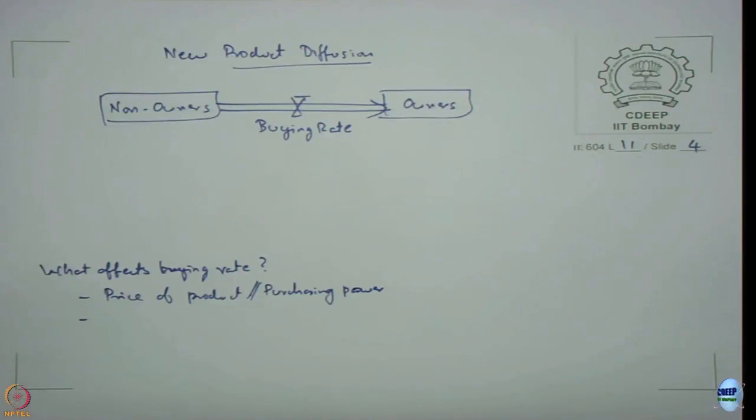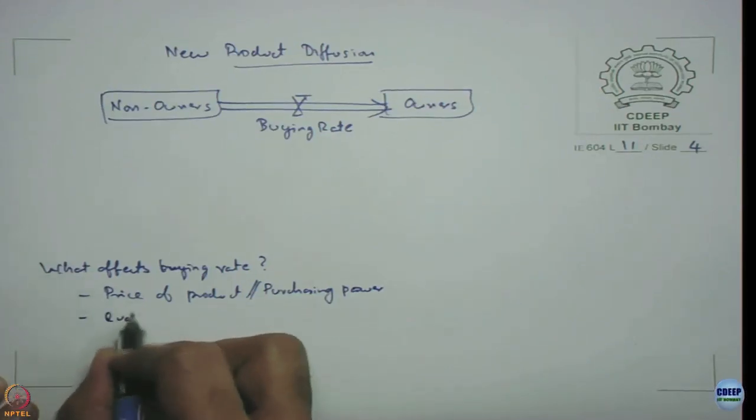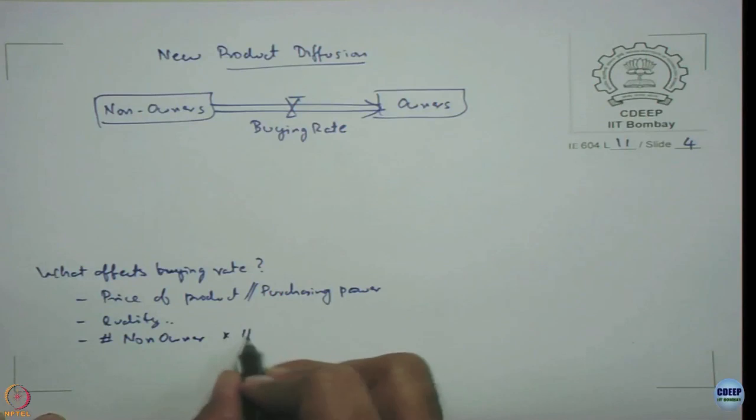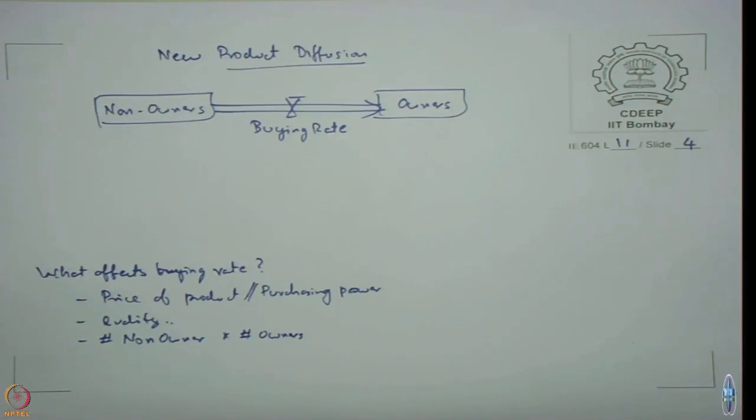Let us just get rid of that quality number of non owners number of owners if lot of non owners are there then buying rate should be higher if number of non owners are low buying rate should be low. We are having marketing.